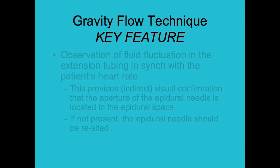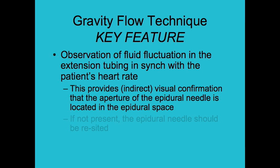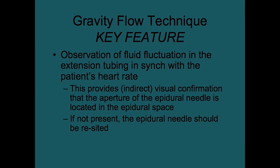Fluid fluctuation within the extension tubing in sync with the patient's heart rate is again noted. This is the key feature of the Gravity Flow Technique. Observation of fluid fluctuation in the extension tubing in sync with the patient's heart rate provides indirect visual confirmation that the aperture of the epidural needle is indeed located in the epidural space. If this fluid fluctuation is not present, the epidural needle should be repositioned. On many occasions, following a perceived loss of resistance, fluctuation of the fluid level did not occur, indicating that the needle tip was not in the epidural space. In all these cases, fluid level fluctuation was obtained by repositioning the epidural needle.